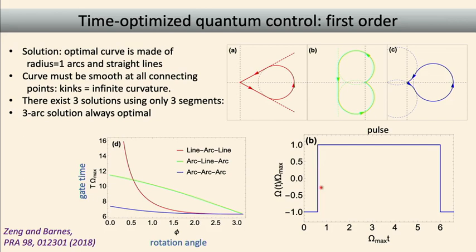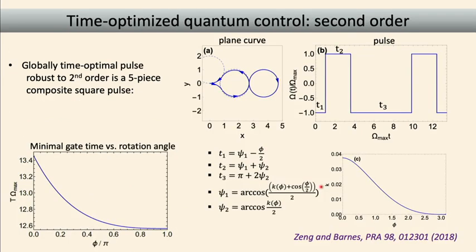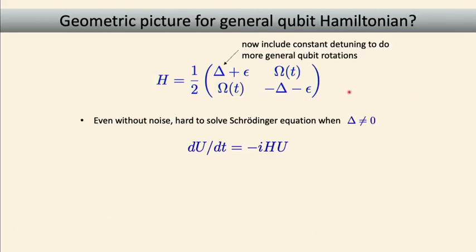Starting with the result that the global optimum is a square pulse — which is a mathematical fact of life — one can then get as close to this as possible given bandwidth constraints in actual physical hardware. We've shown that imposing bandwidth constraints, you can get very close to this time-optimal gate speed while respecting those constraints. Going to second order, demanding cancellation of the first two orders of noise with the shortest possible curve, the optimal curve is now comprised of five circular arcs — a five-part square pulse.